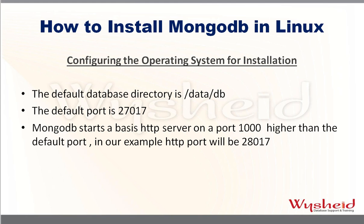Now we'll see how to configure our operating system for the installation. In the case of Linux, the default database directory where databases are created is /data/db. If you want to maintain the default location, you must have this directory created beforehand. MongoDB expects the directory to already exist before startup. The default listener port through which you can connect to the database is 27017. MongoDB also starts a basic HTTP server on a port 1000 higher than the default port.